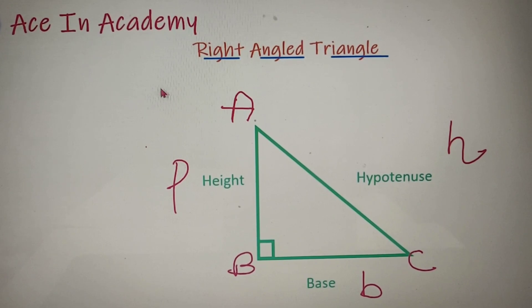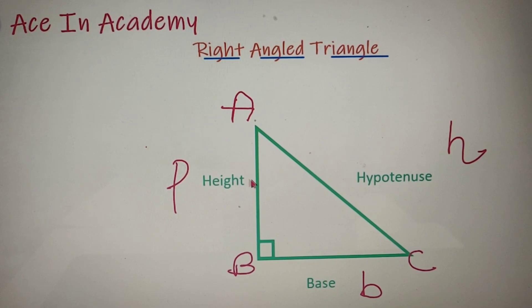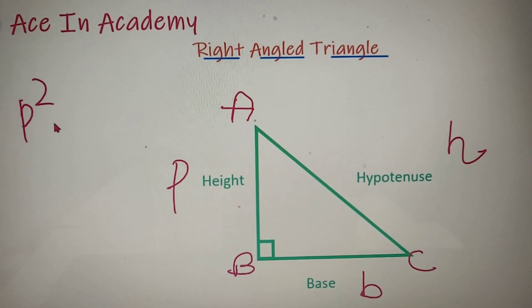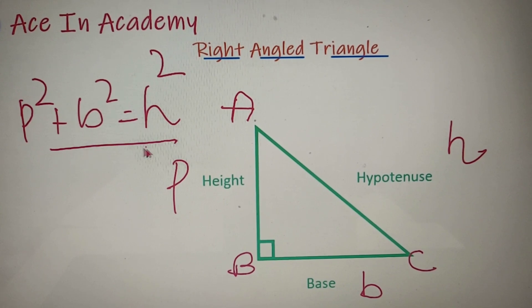There is a very famous theorem related to a right-angled triangle called the Pythagorean theorem. It is very important and has many applications in real life. The theorem states that the sum of squares of the height and base is equal to the square of the hypotenuse — that is, P² plus B² equals H². This theorem is valid for all right-angled triangles; if a triangle does not follow it, it is surely not a right-angled triangle.